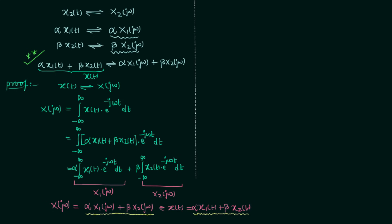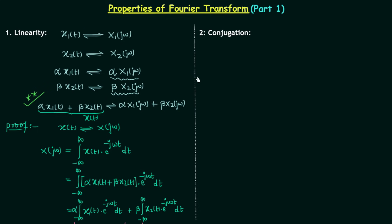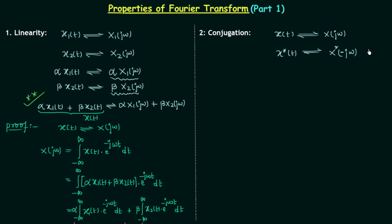Now we will move to the second property, which is the conjugation property. Again I will give you the property first and then we will prove it. Let's say there is a time domain signal x(t) and this signal has the Fourier transform X(jω). After performing the conjugation operation we have x*(t) as the signal, and the Fourier transform which was initially X(jω) will change to X(-jω) conjugate. So this is the conjugation property and now we will prove it.